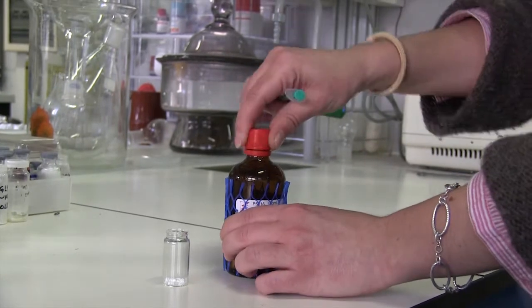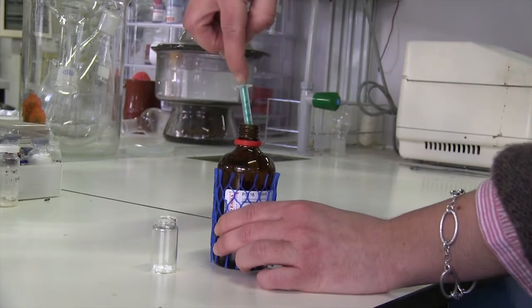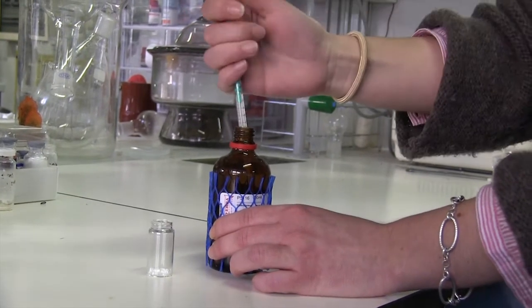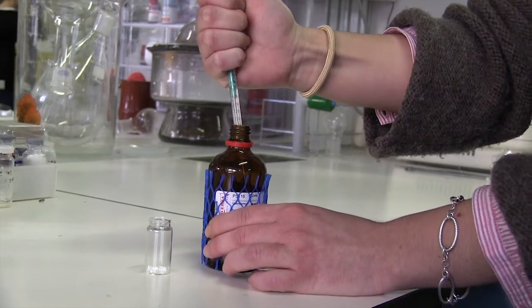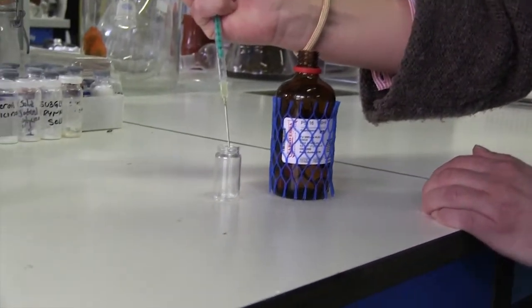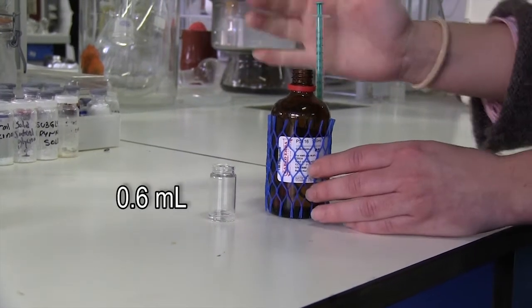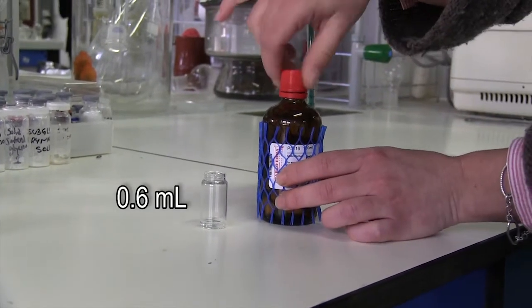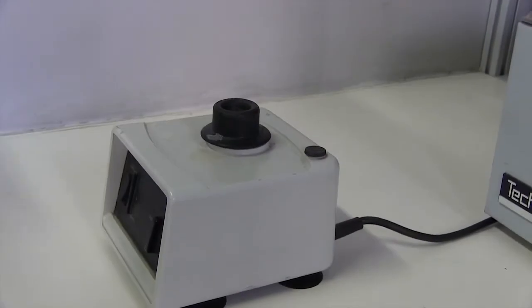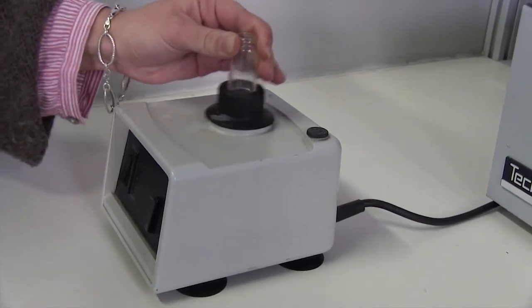With the help of a 1 or 2 ml syringe, we take 0.6 ml of the deuterated solvent. In this case, we are using chloroform, which is the most common solvent in NMR. The solvent is introduced in the vial in order to dissolve the sample. The solution is vigorously shaken to make sure that everything gets dissolved.